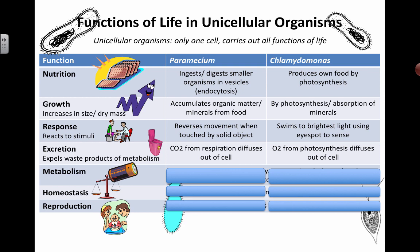Both of these things have to get rid of waste products, and their primary waste products are a result of the method they use for obtaining energy. For paramecium, it's more of a respiration-type process, where the end waste product is going to be carbon dioxide. Whereas for chlamydomonas, because they're doing photosynthesis, the opposite — oxygen — is the waste product. If you know the equations for cellular respiration and photosynthesis, you should be able to see that those are actually opposite processes.